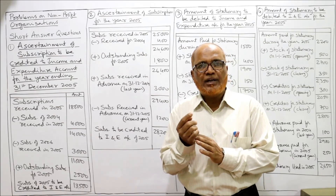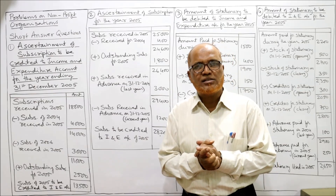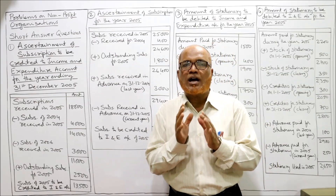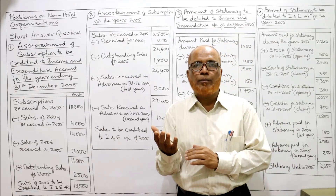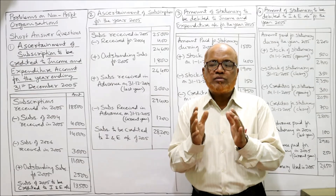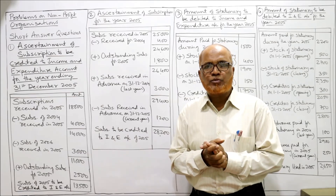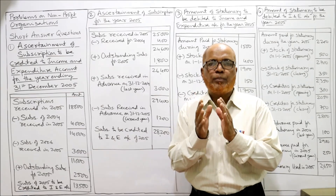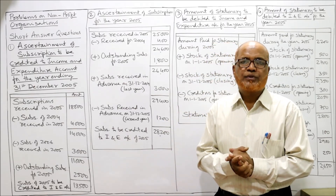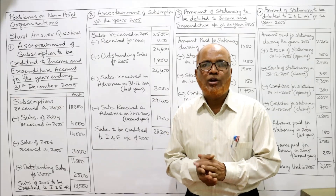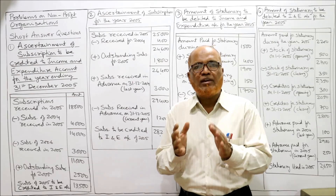First we are going to start with short answer questions, where we will calculate the different items used in the final accounts of nonprofit organizations. Before starting, hope everybody has got the hard copy — the printout of the problems. The problems are given in the link in my description. Go to the last line of my description, find the link, take a copy of all the problems, and keep it ready before watching the video.